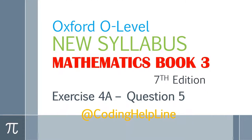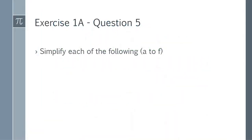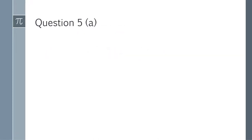Hello guys, welcome to my channel. In this video I am going to solve question 5 from mathematics book 3, exercise 4a. Question 5: simplify each of the following — it has 6 parts, a to f. Let's begin with 5a.